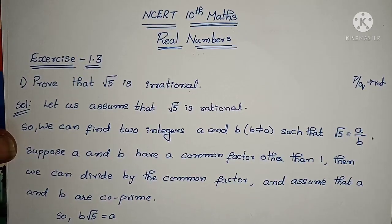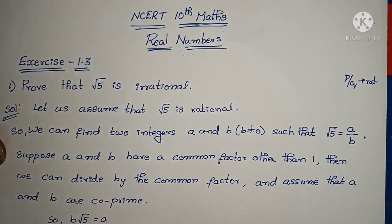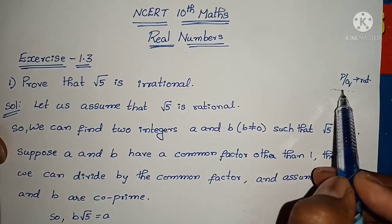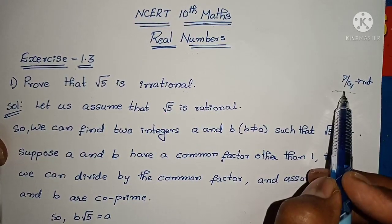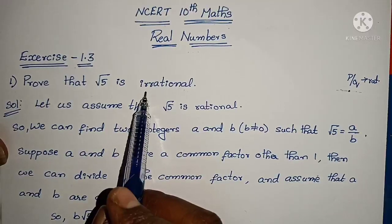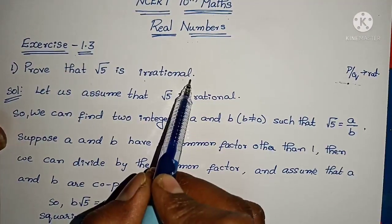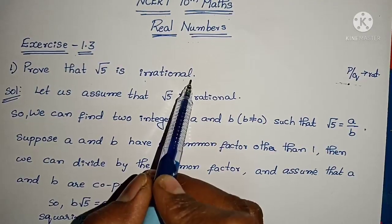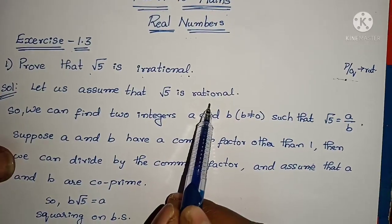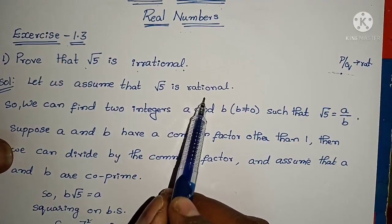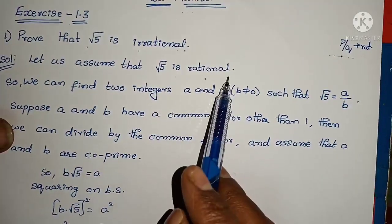Any number which can be written in the form of p by q is called a rational number, and which cannot be written in the form of p by q is called an irrational number. For proving that root 5 is irrational, let me consider a contradiction — I am assuming it is a rational number. Therefore, let us assume that root 5 is rational.